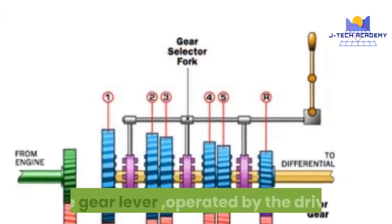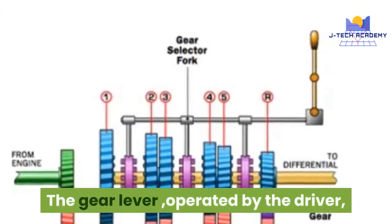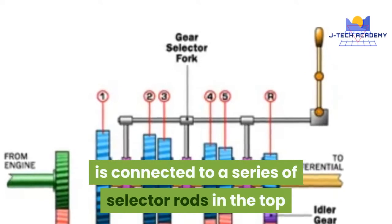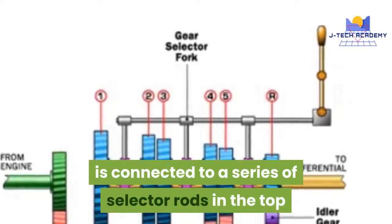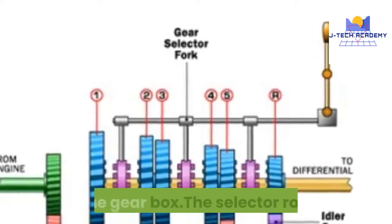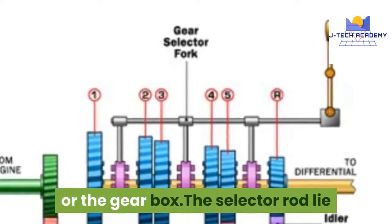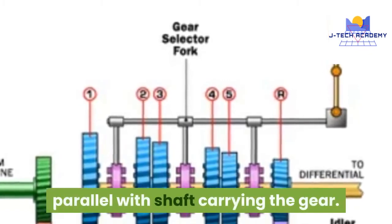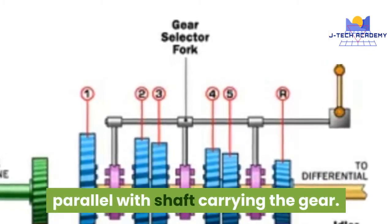The gear lever, operated by the driver, is connected to a series of selector rods in the top of the gearbox. The selector rods lie parallel with the shaft carrying the gears.